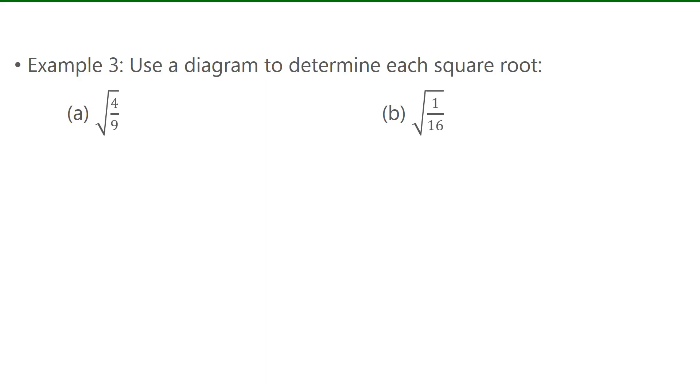For this last example, we can use diagrams to help us determine if something is a perfect square, and the diagram can help us determine what the square root is. So for 4 over 9, we draw a square and then break it into 9 equal sections. Then we shade 4 blocks and shade them in the form of a square if possible.